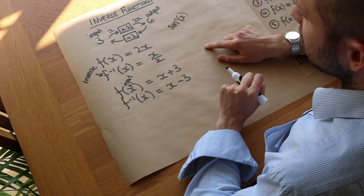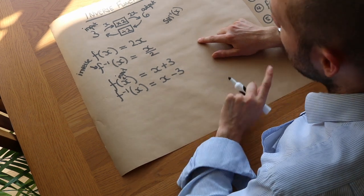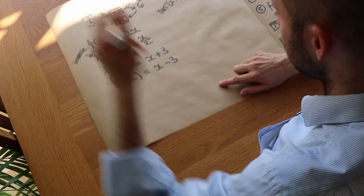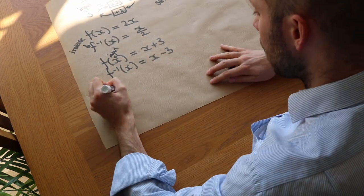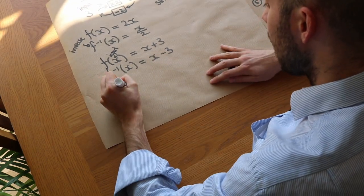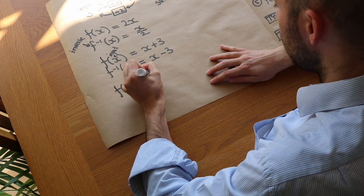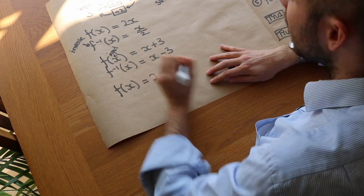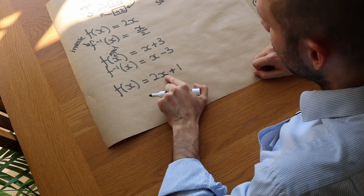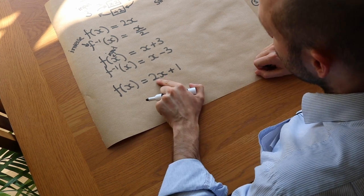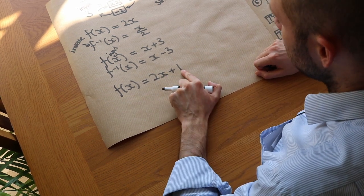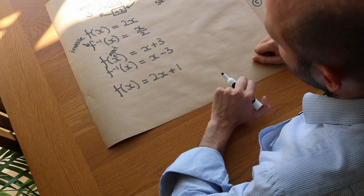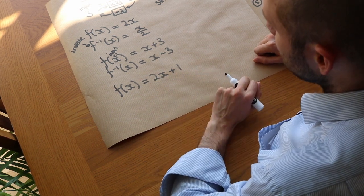For harder functions this is harder to do, and I'll show you an algebraic method that will work for any function. Let's do a more difficult one — say f(x) = 2x + 1. You could do this in your head: if you have an input you're multiplying it by 2 and adding 1, so the opposite would be to subtract 1 and then divide by 2, and we could construct the function this way.